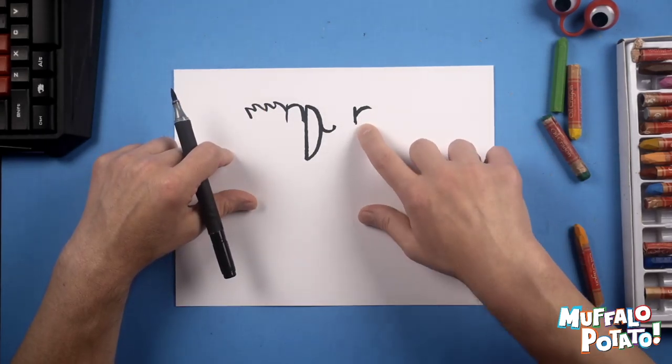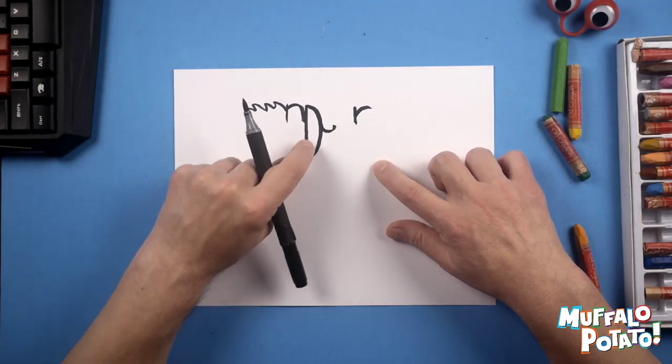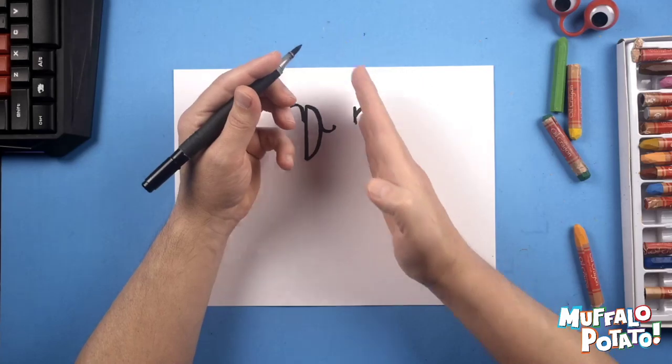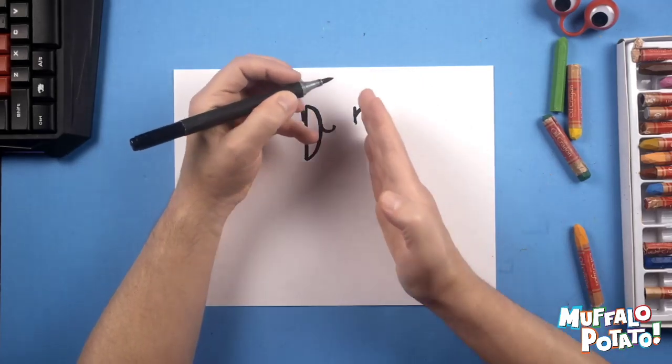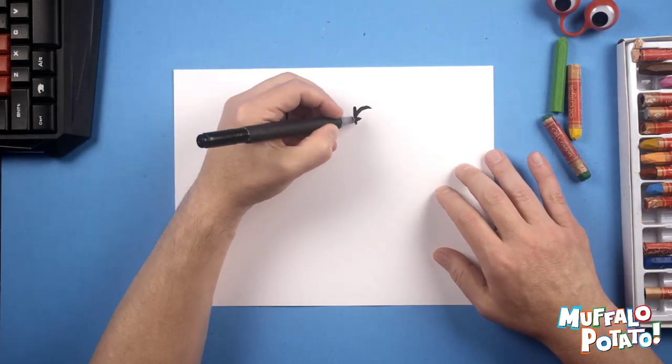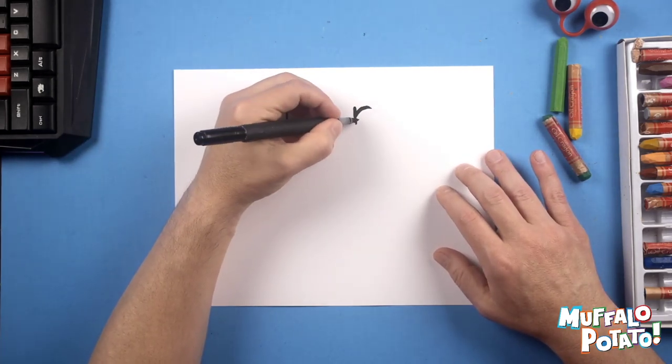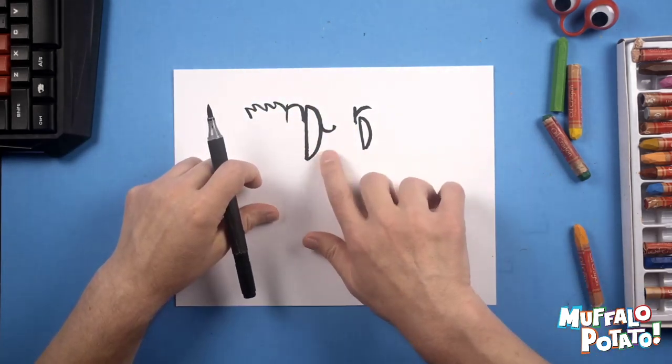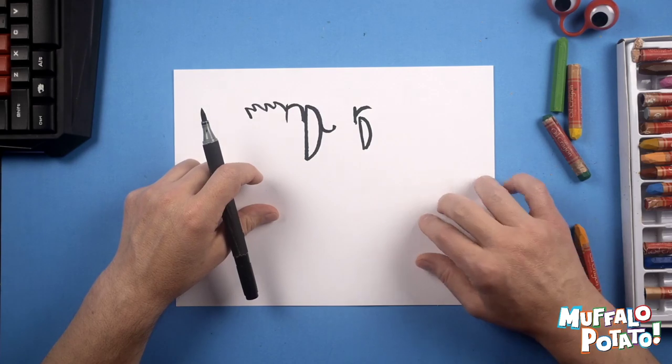Right beneath this R and at a little bit of an angle, we're going to do a slightly smaller version of this D. Still a skinny D, but a little bit at this angle, leaning to the left a little bit. Just another capital D, smaller than that D at a slight angle.